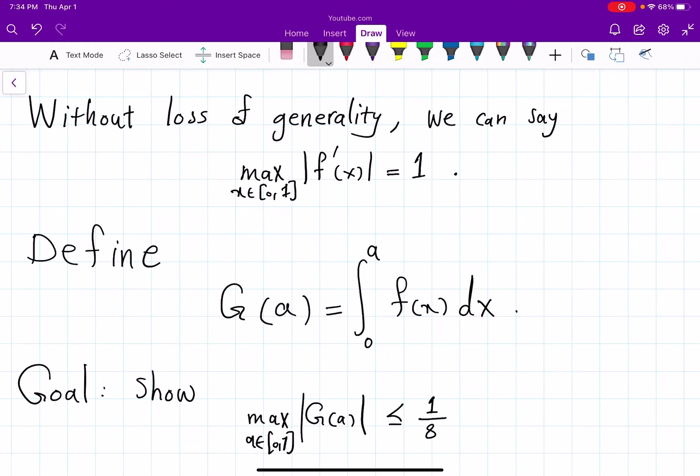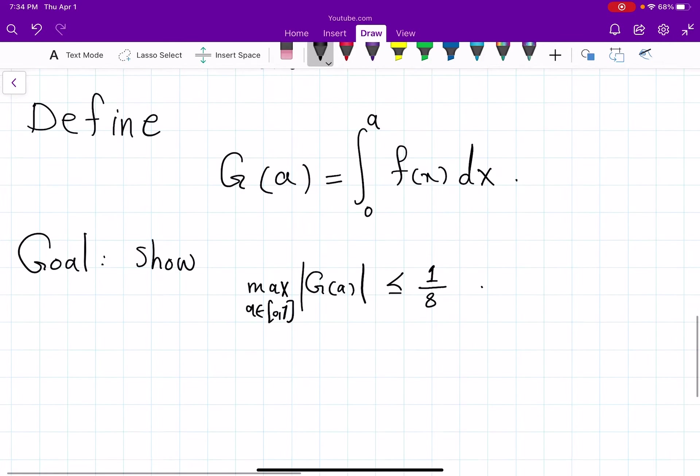So under all these assumptions my goal is to show that the maximum value for g(a) that I can get for any a from 0 to 1 is bounded by 1 over 8 times the maximum of derivative which is just 1. Okay, already some nice simplification there.